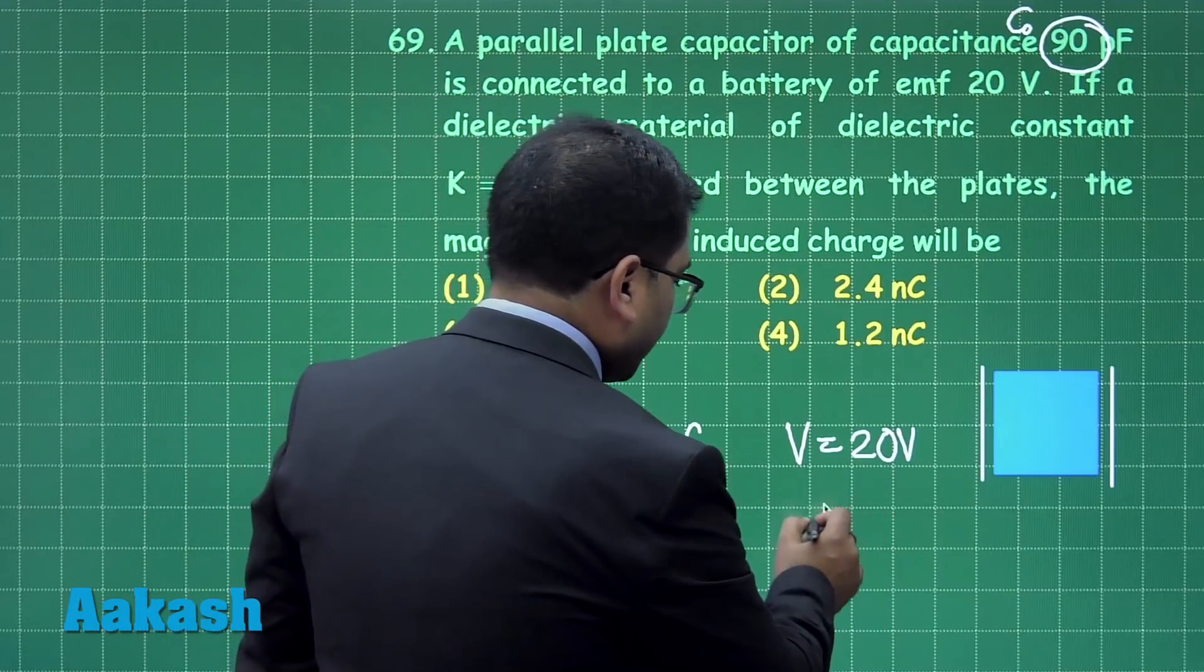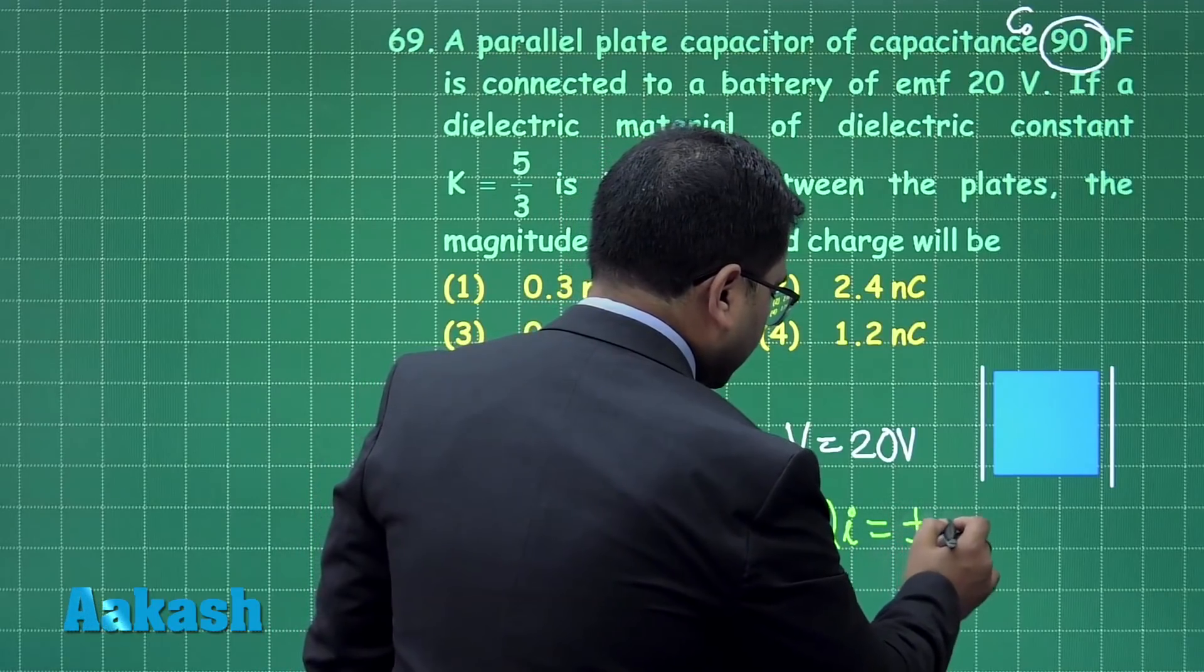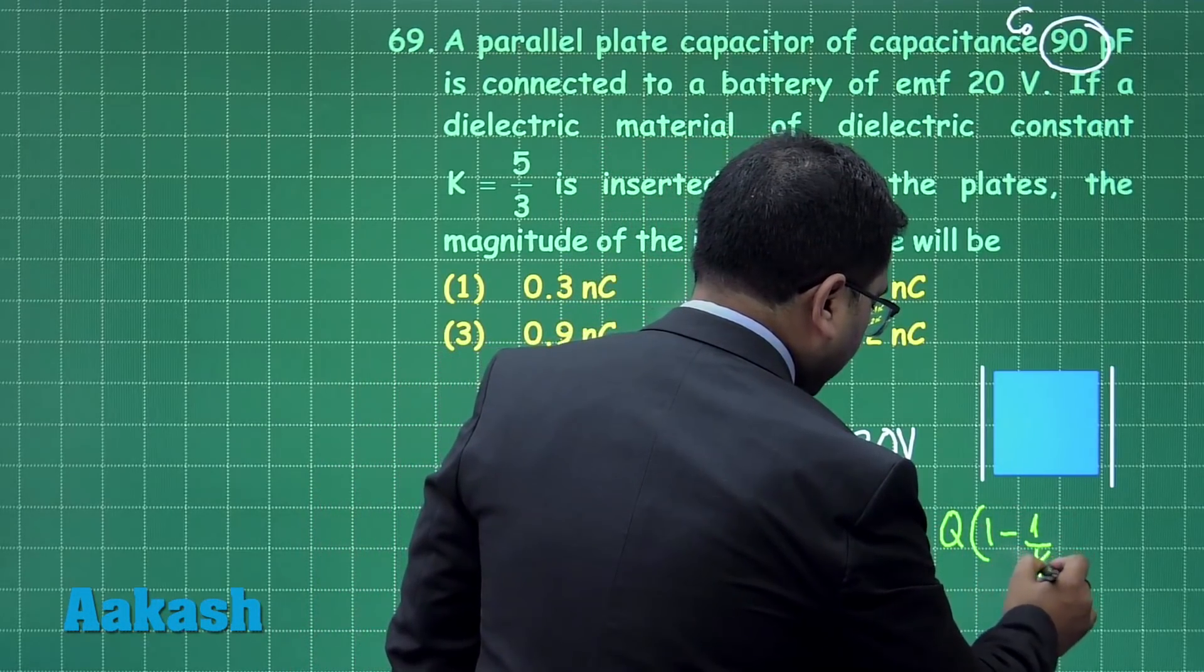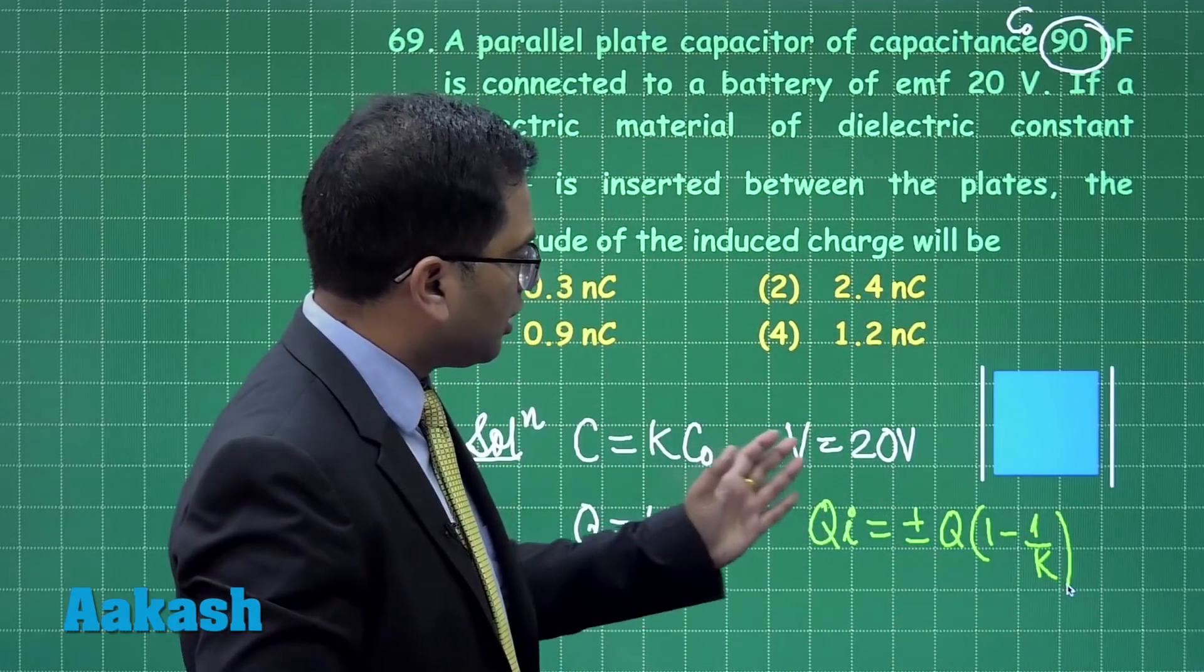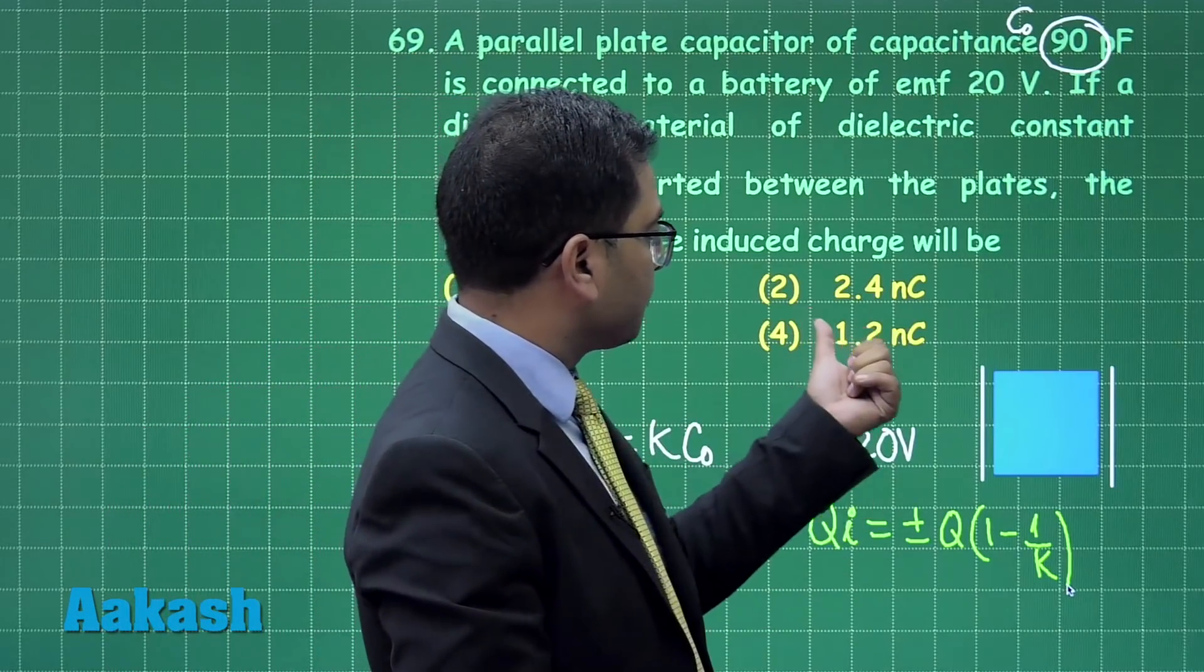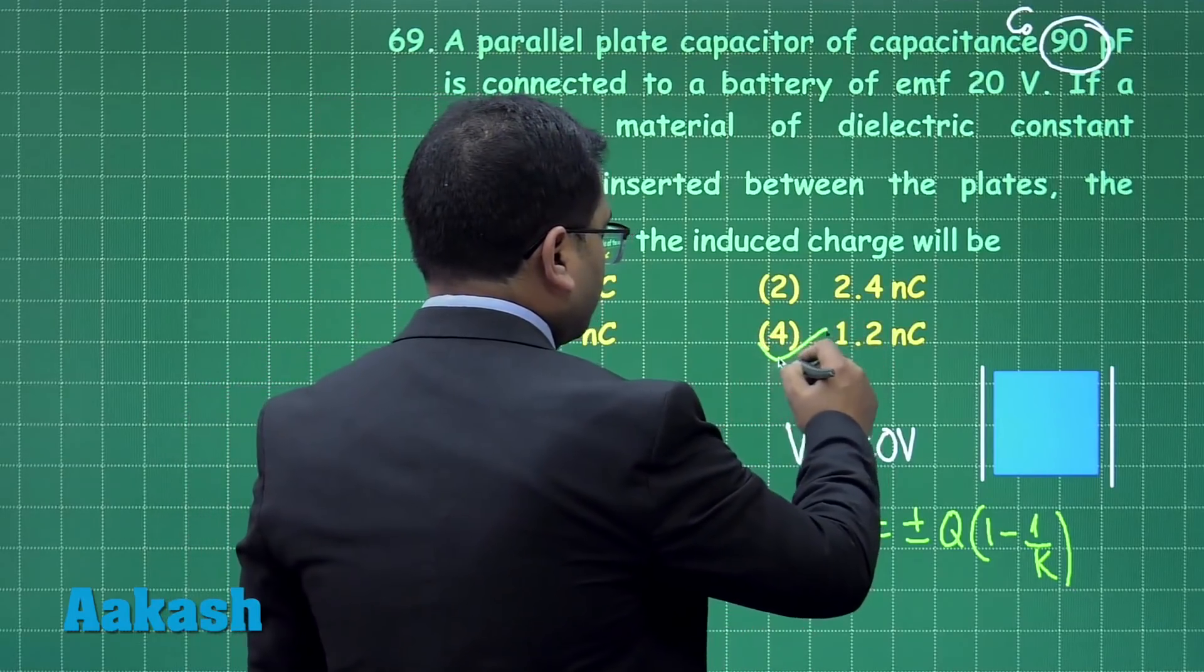That formula is Q_induced equals plus or minus Q times (1 - 1/K). The calculations are not tedious. When you solve this and plug in all the values, you are going to get the induced charge as 1.2 nanocoulomb.